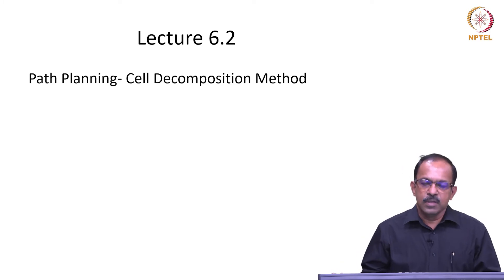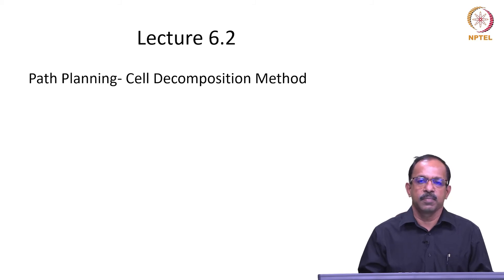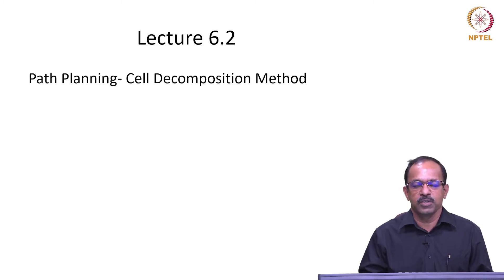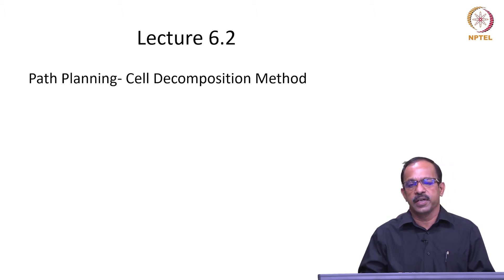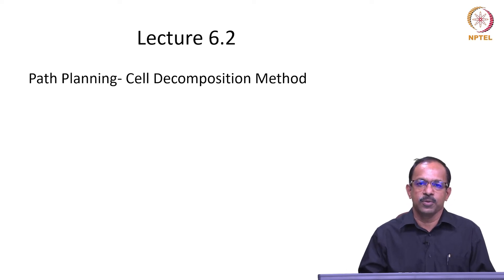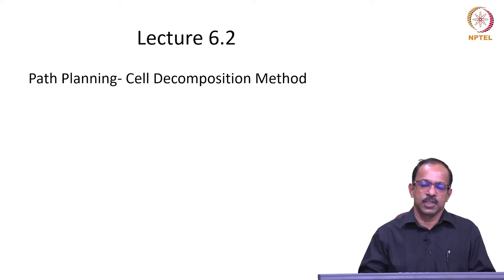Hello everyone, welcome back. In the last class we talked about the path planning of mobile robots and mentioned that there are two steps involved in navigation of the robot: one is the path planning and the other one is the obstacle avoidance. For path planning, we used different methods to identify a feasible path for the robot to move from its current position to the goal position. Graph search is one of the commonly used methods, which is an offline planning method, where we first make a graph of possible paths from start to goal and then search within that graph to find the best feasible path.